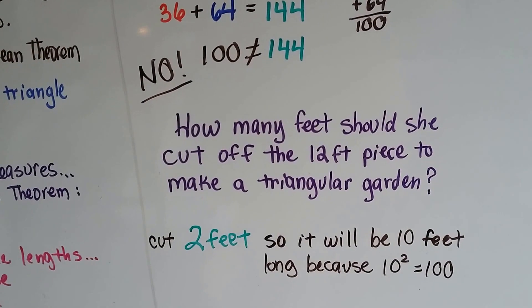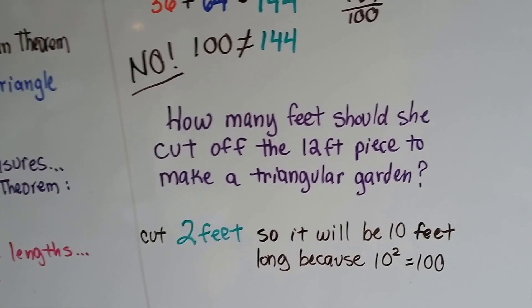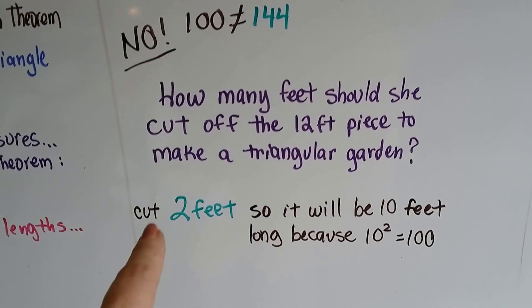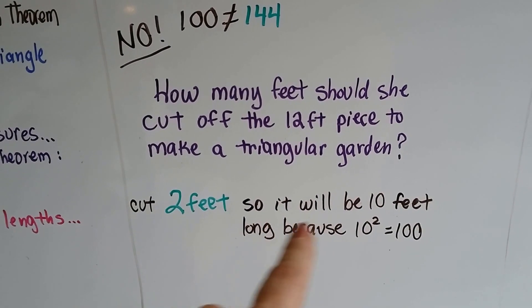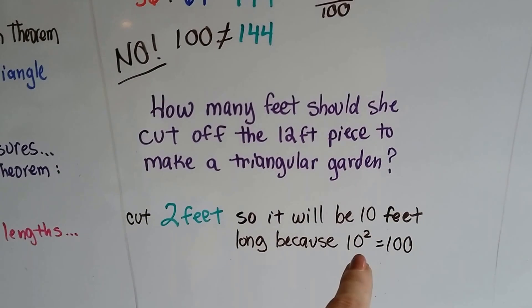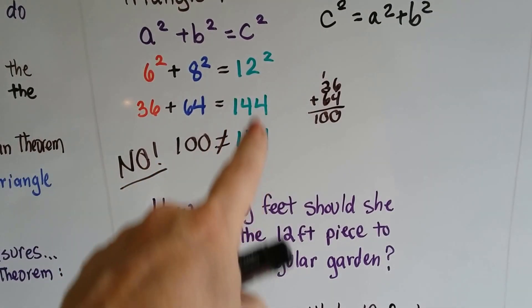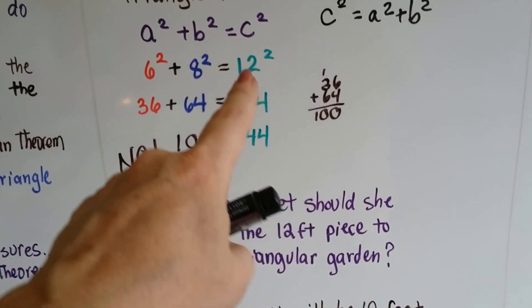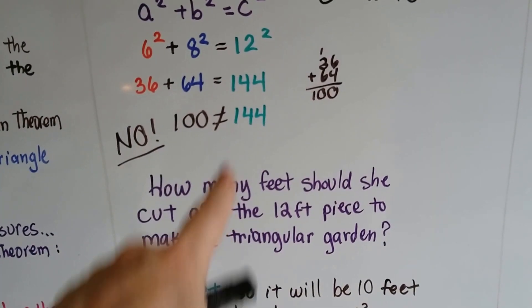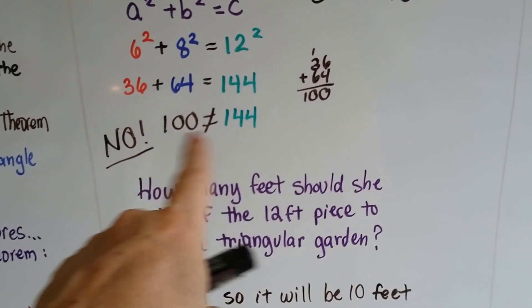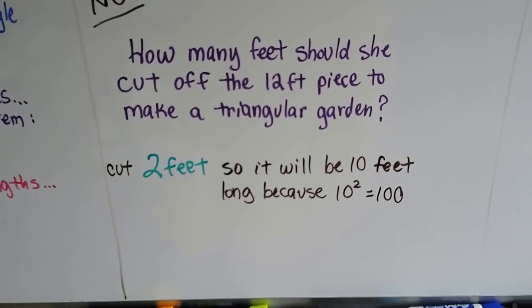So how many feet should she cut off the 12 foot piece to make the triangular garden? She should cut 2 feet off so it'll be 10 feet, then it would equal the 100. If this was 10 squared, if it was 10 feet long and she took 2 feet off, that would be 100 and it would be a right triangle for her raised garden.